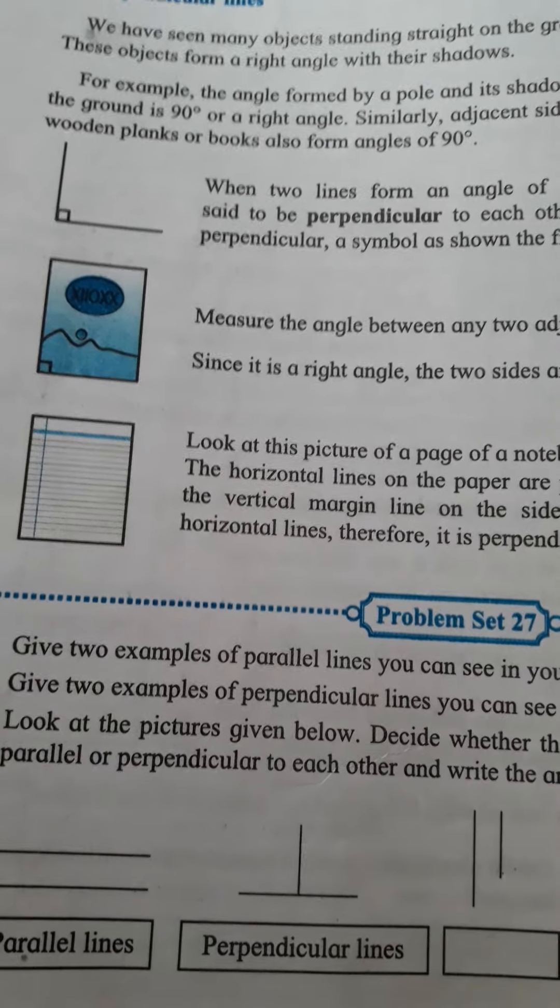When these lines make 90 degrees, these lines are called perpendicular lines. So students, our sixth lesson on angles is now over. You try to solve problem set 27. Today we will stop here.